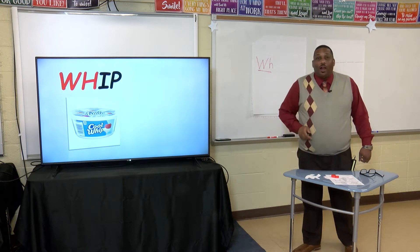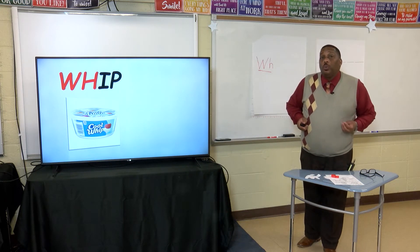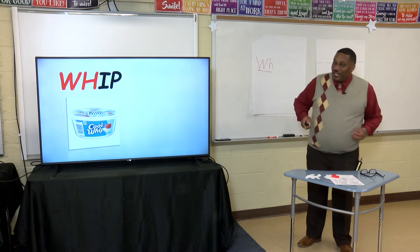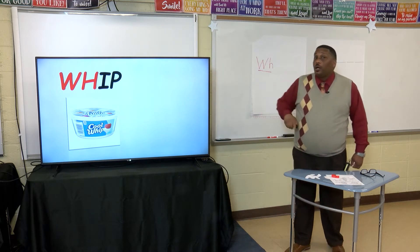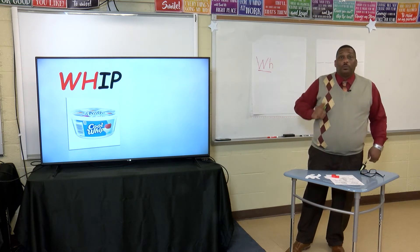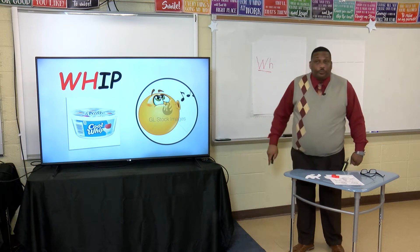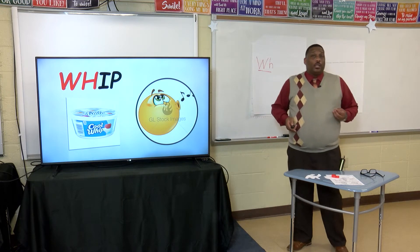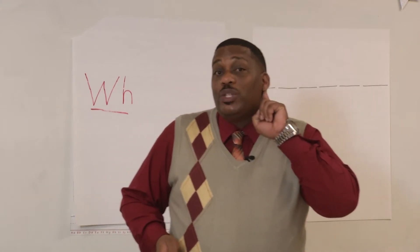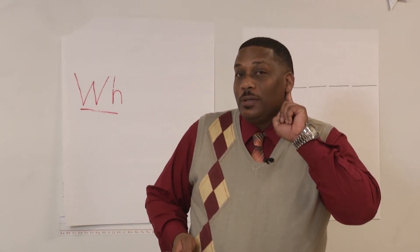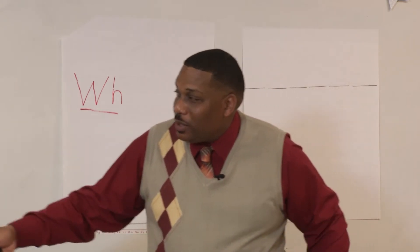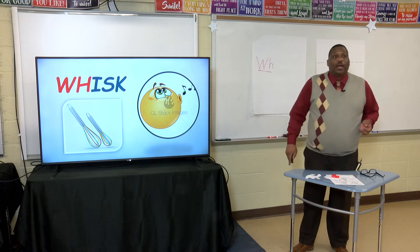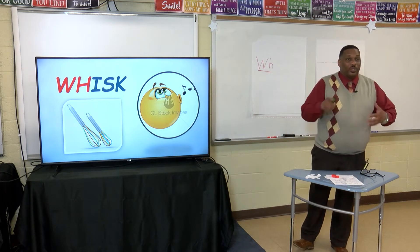Our next word is whip — 'wh, wh, whip.' The first two letters are red, so that tells me the initial sound is 'wh.' You whistled and you were correct — whip, as in cool whip, something we put on top of our desserts. Next word, listen carefully: whisk — 'wh, wh, whisk.' First two letters are red, initial sound is 'wh,' and a whisk is something your mom might use when she bakes a cake.